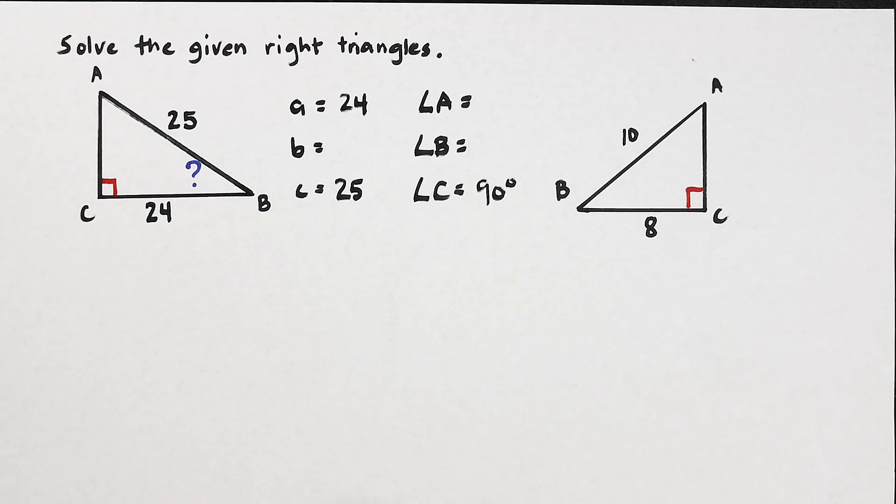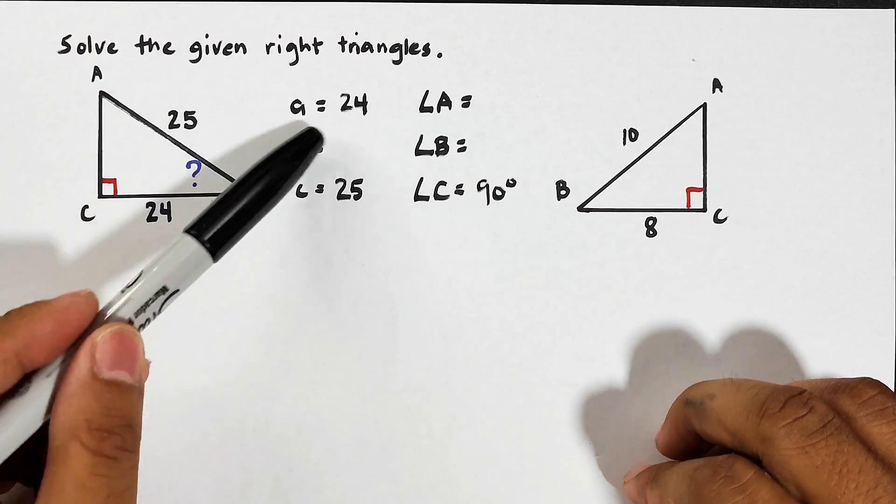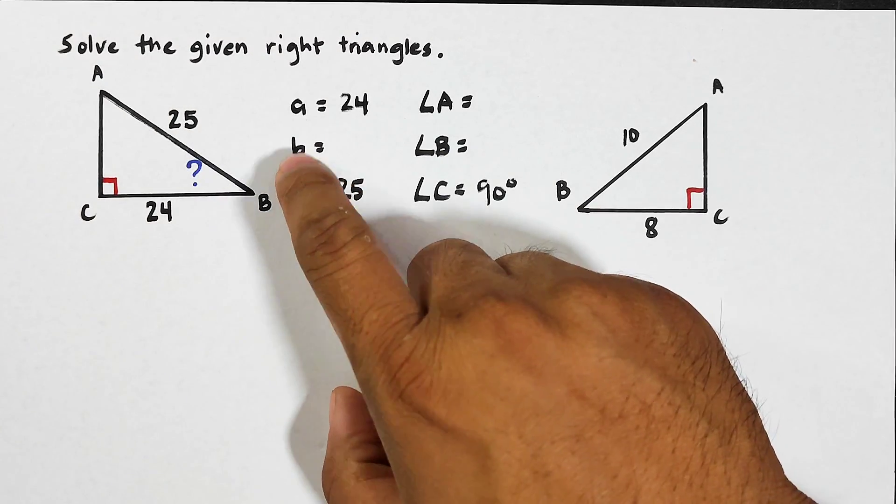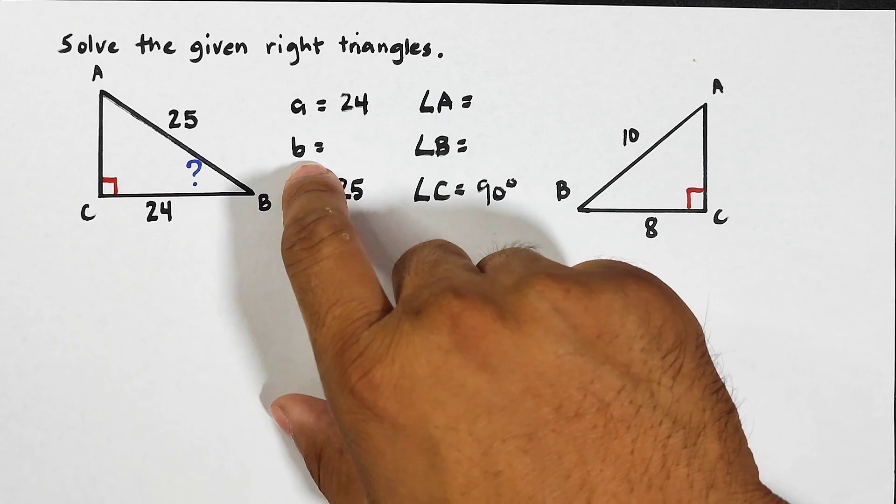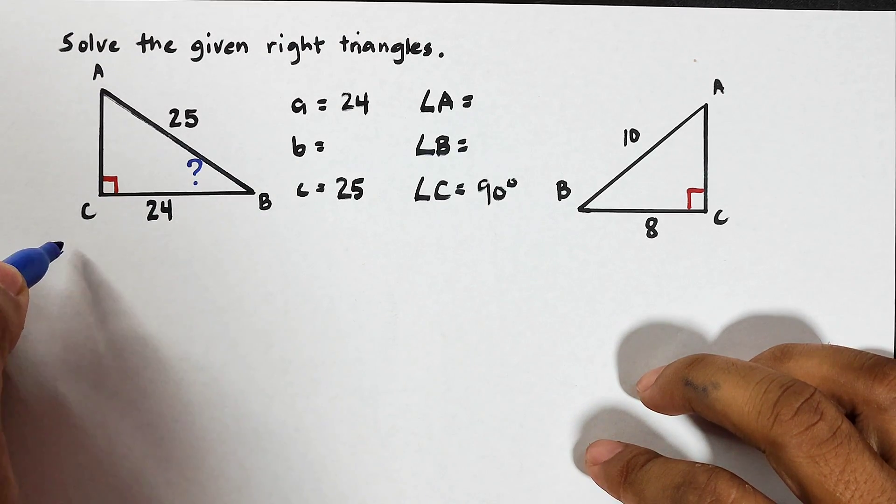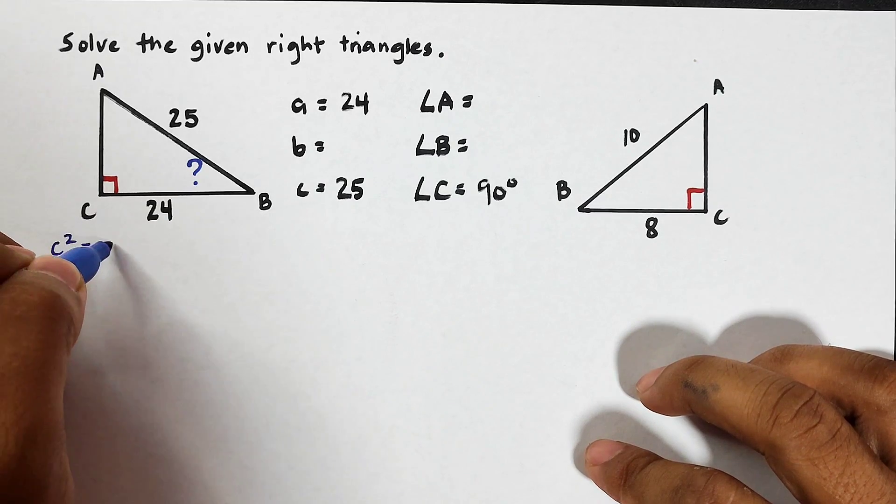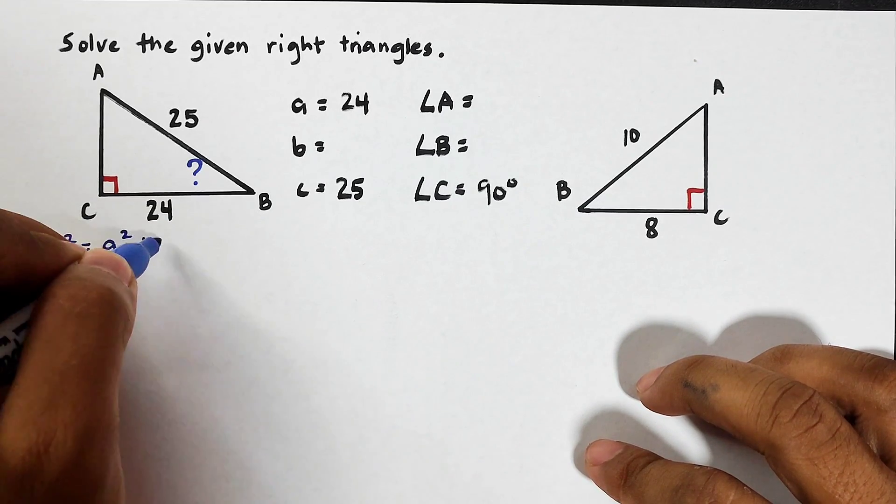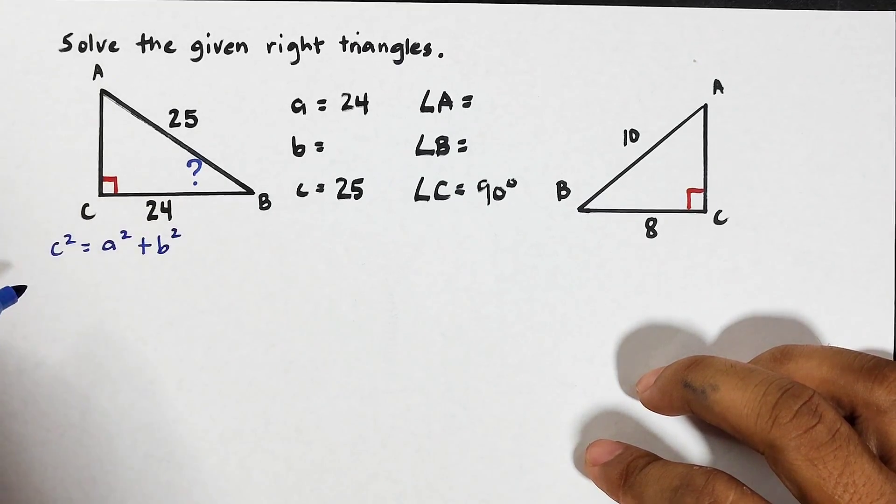So where can we start? We can start by finding this side or the side b. Now remember guys, this is a right triangle, so how are we going to solve for side b? We will use the concept of the Pythagorean theorem. We will use this formula: c squared is equal to a squared plus b squared.